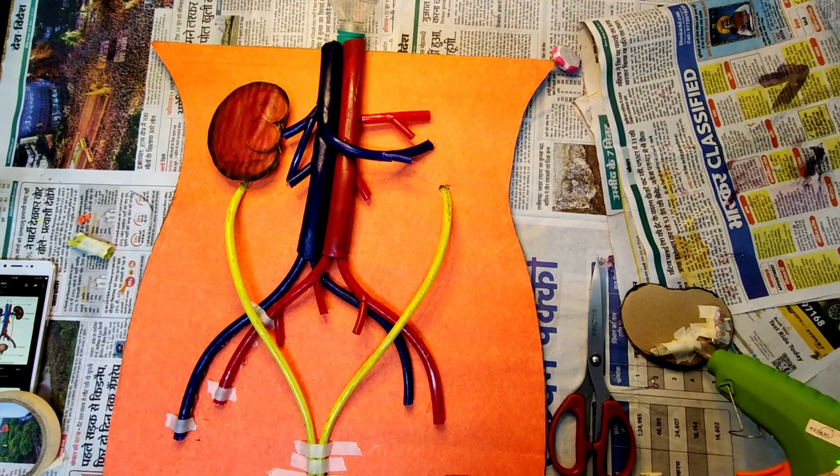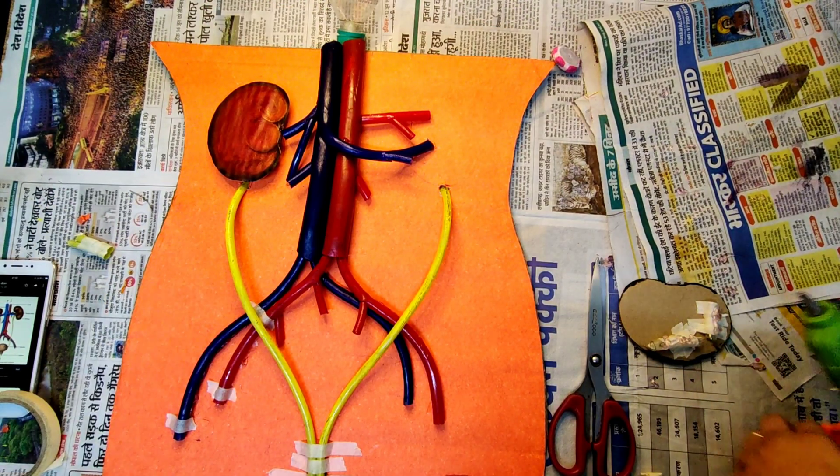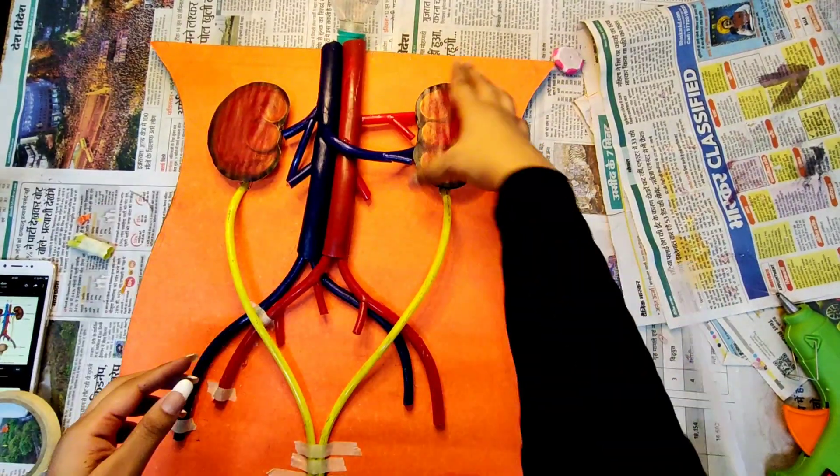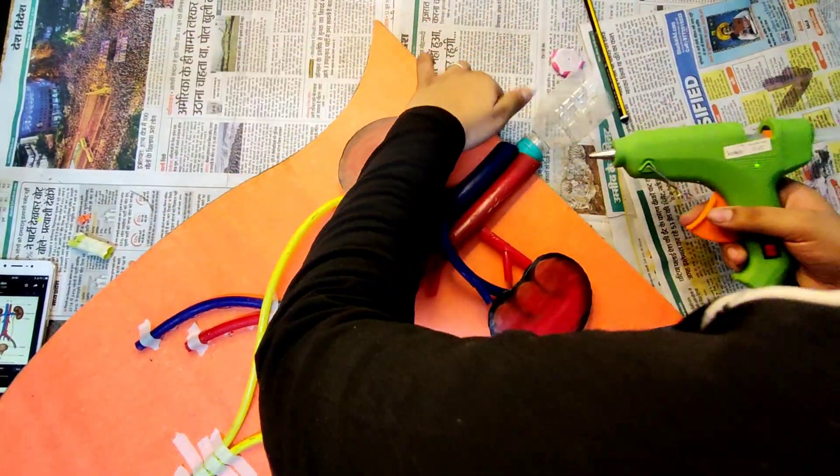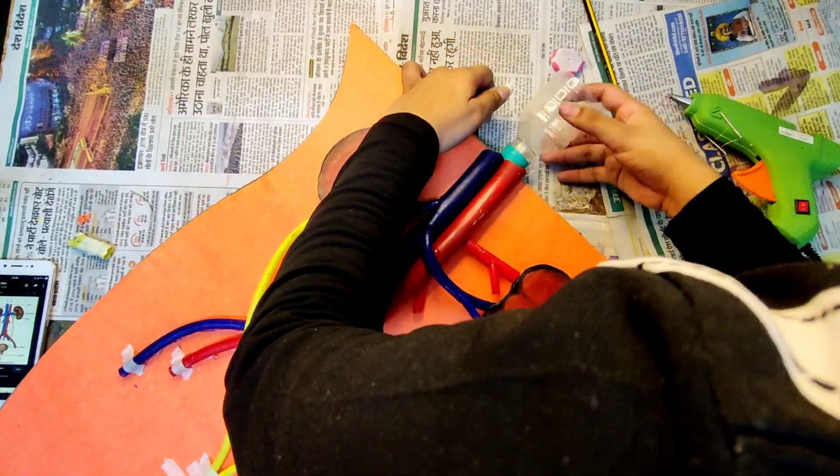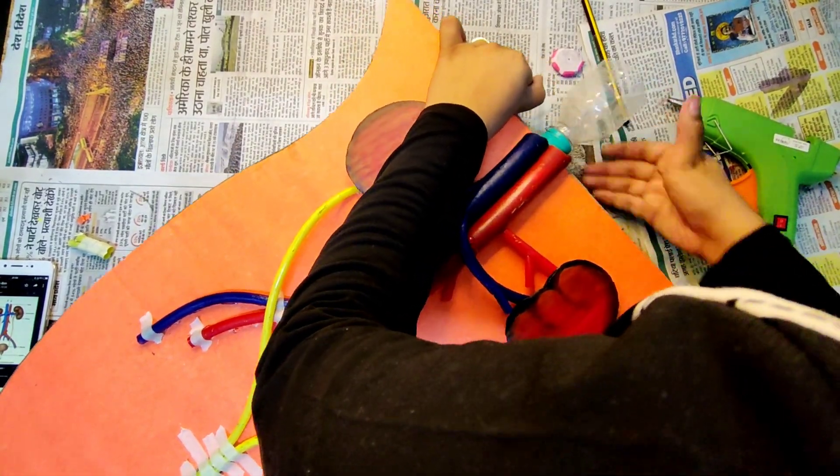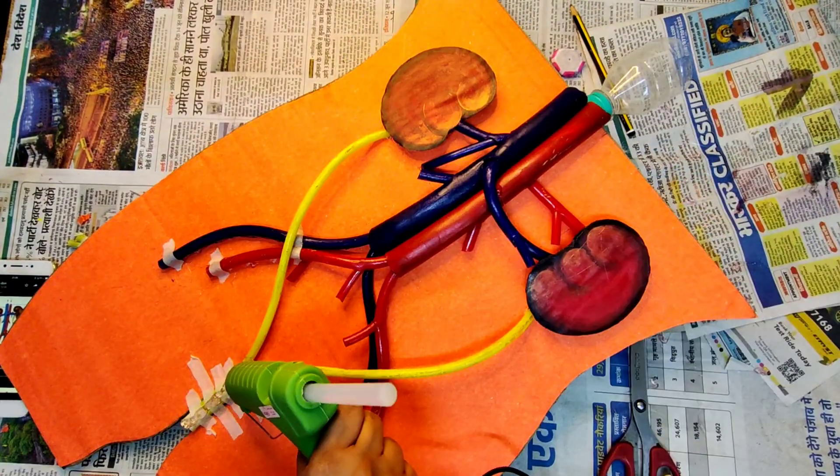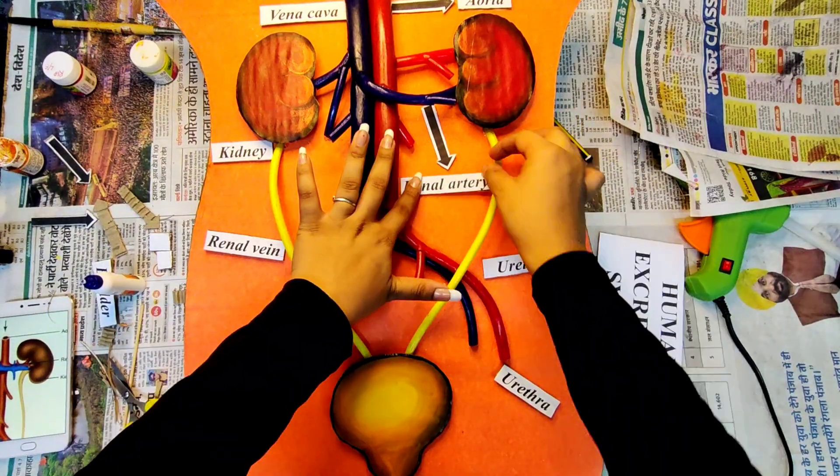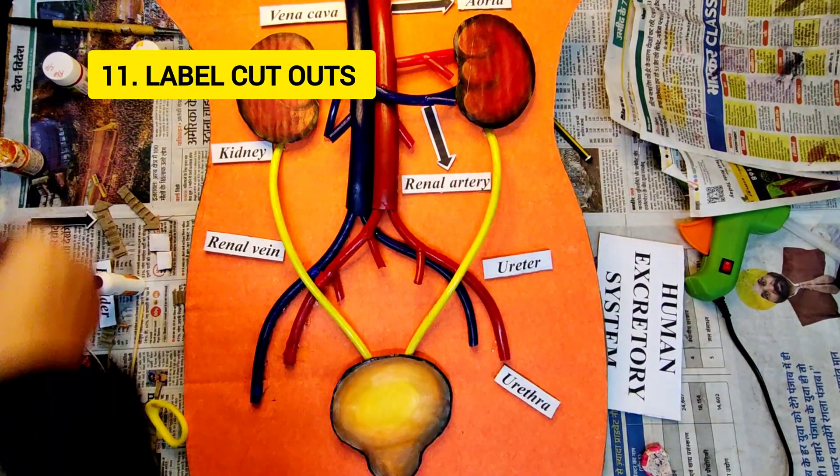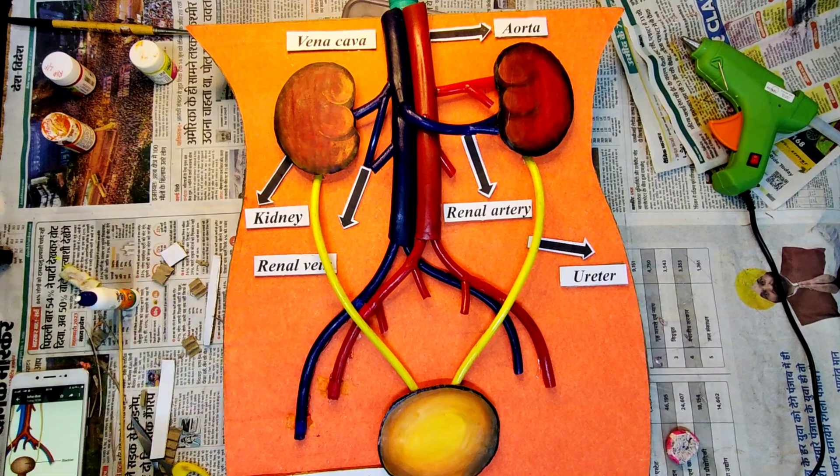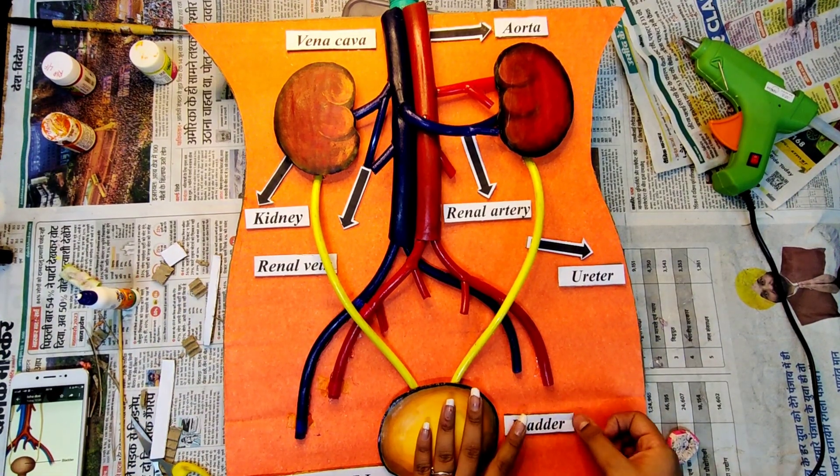Now stick our 3D kidneys beside the renal veins and renal arteries with the help of a glue gun. Carefully attach the transparent bottle with the aorta and stick the gallbladder in its place. Lastly, with the help of fevicol, paste all the labels and arrows in their proper places. I've used labels for each and every organ here.